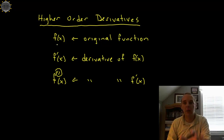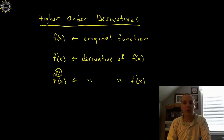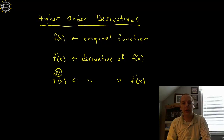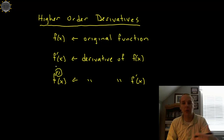Now one thing we'll have to talk about is what this means. F double prime does not give you the slope of the original function — that's what f prime's job is. In some sense, f double prime gives you the derivative or the slope of the derivative graph, though that's probably not very helpful at this point. We'll get into some applications later on.